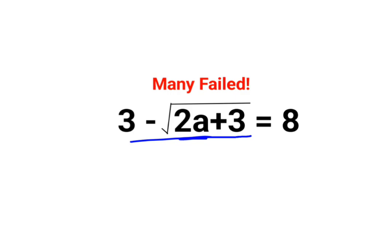In this case, what we should do is see if I put the root on this side, it's very easy. Things become very easy. Since there is a minus here, when you shift it on the other side it should be plus root of 2a plus 3.